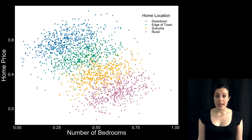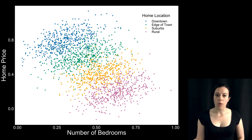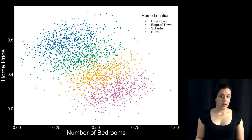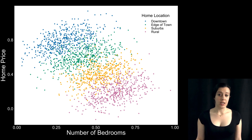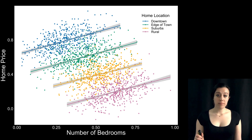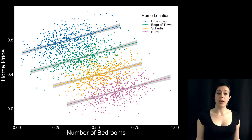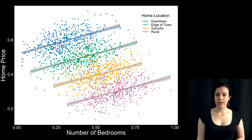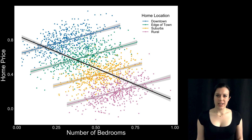Well, that's certainly odd — these data form beautiful clusters. But when you look more closely, you see that within each cluster, the number of bedrooms appears to be positively related to home price, which is just what you expected. And being the thorough researcher you are, you run separate regressions on each of the home types. It confirms your intuition: there's a positive relationship between the number of bedrooms and the price of the home within each home type. But there's still that negative relationship overall.